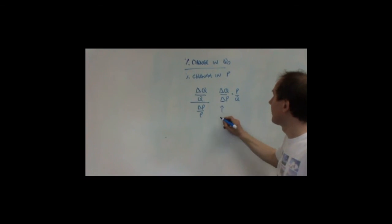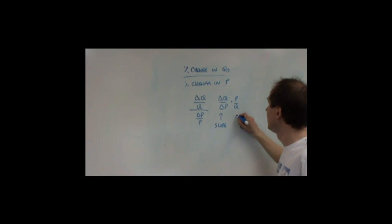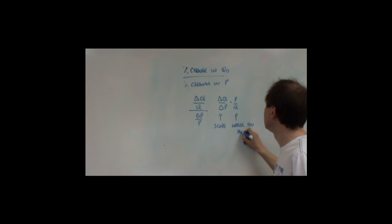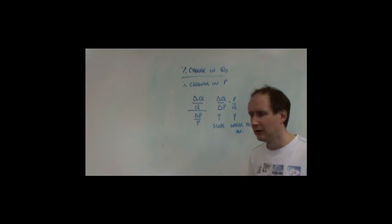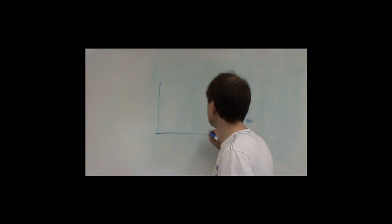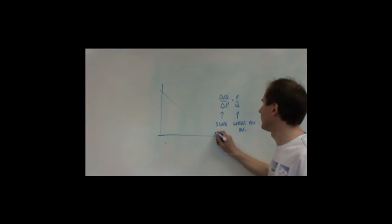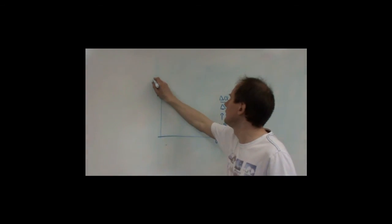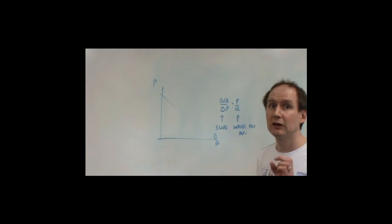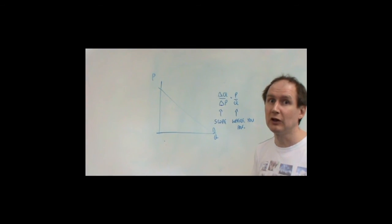That bit is the slope. That bit is where you are on a demand curve. What that means, then, is that if I was to draw the entire demand curve, we can't really say that that demand curve is either elastic or inelastic, because elasticity varies along its length.